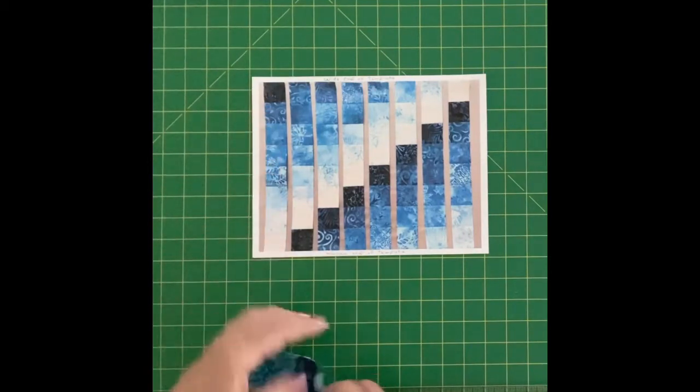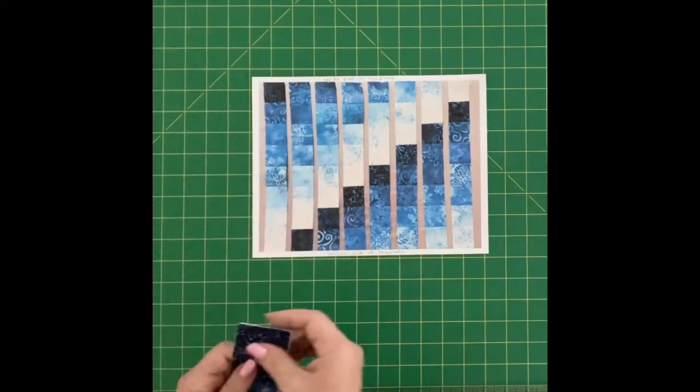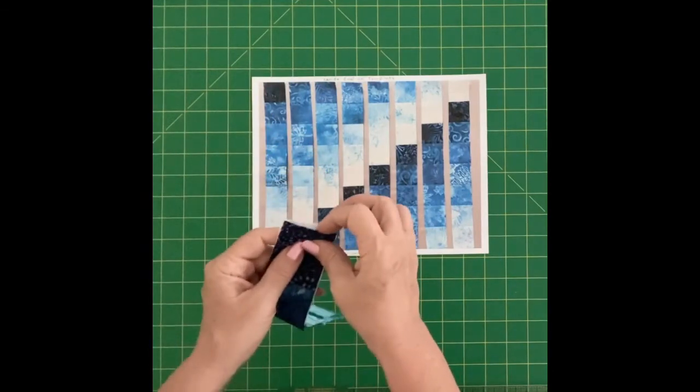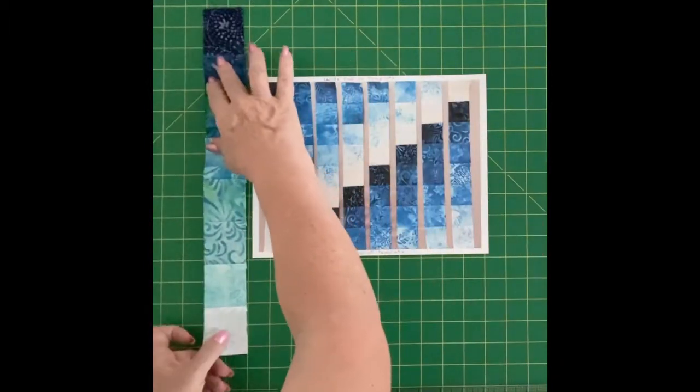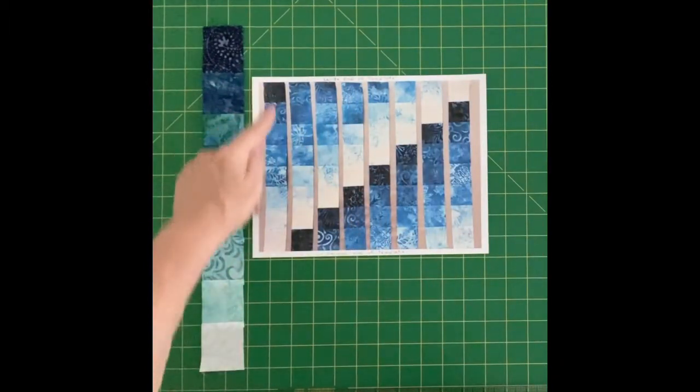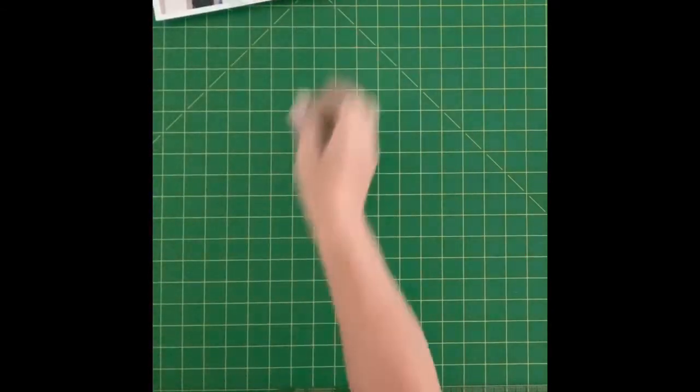So for this very first one, you're going to be opening up the seam allowance between fabric number one and fabric number eight. So I've already picked out the stitches from that, and so we have our strip now that's going to be used for this right here. So now we're ready to apply the templates to the fabric.